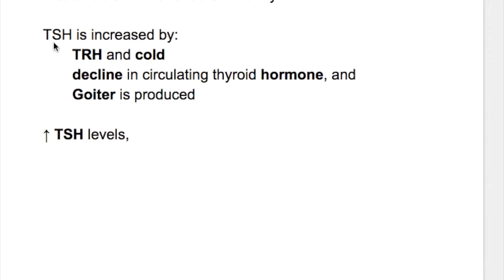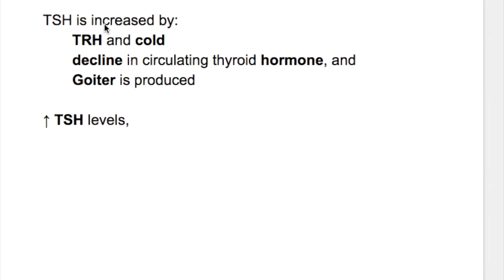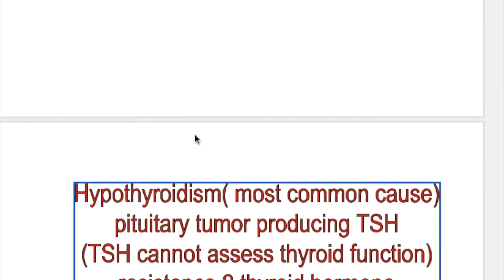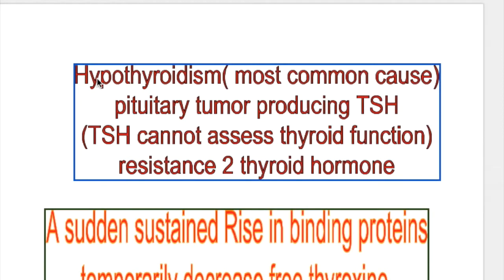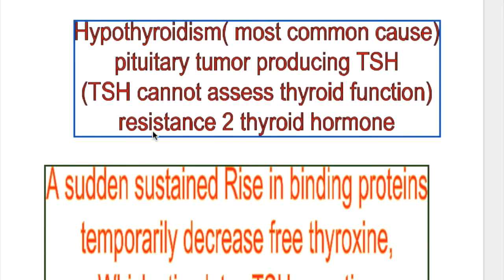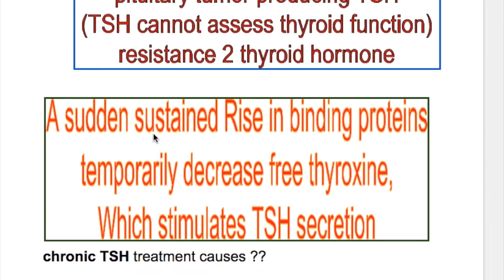What conditions increase TSH? TRH increases TSH, as does cold and a decline in circulating thyroxine hormone. Increased TSH leads to goiter. TSH is also increased in hypothyroidism, which is the most common cause of increased TSH. TSH is also increased in TSH-producing pituitary tumor — in that case TSH cannot assess thyroid function — and number three, if there is resistance to thyroid hormone.